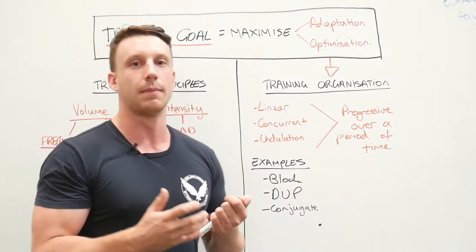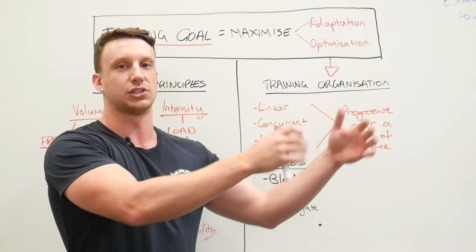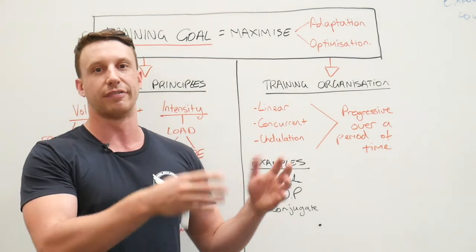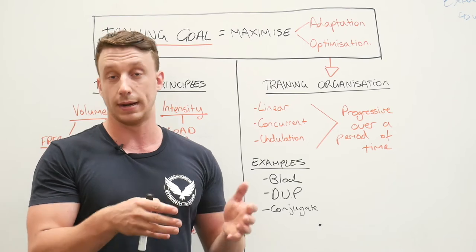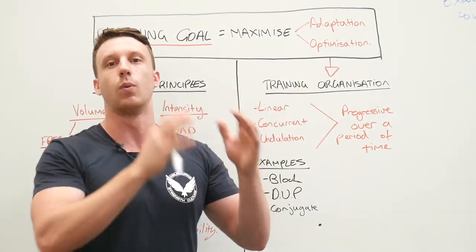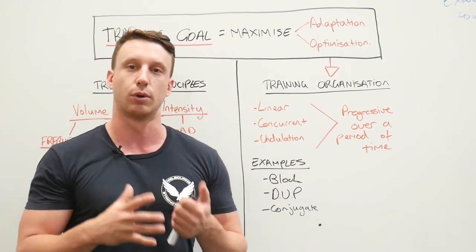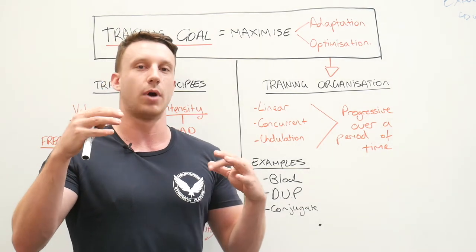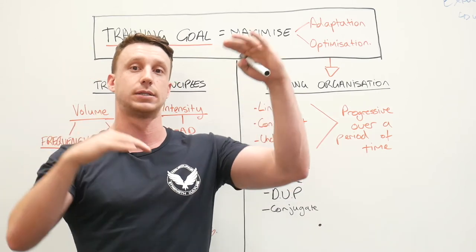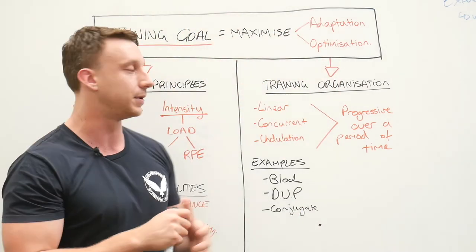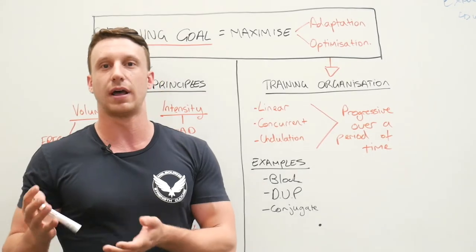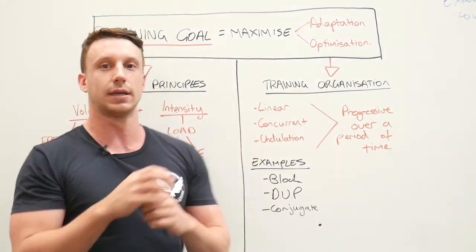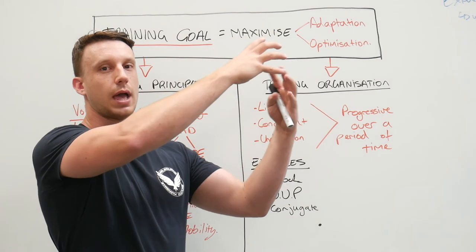A linear periodization program moves linearly through a step-by-step process of targeting one biomotor quality. For strength, you might do 5x5 in week one, 5x4 in week two, 5x3 in week three, 5x2 in week four, and 5x1 in week five. Concurrent programming is a style involving two variables interplaying throughout the weekly cycle — for example, a 5x5 for strength development alongside a 5x10 for volume development, two variables working together toward a desired result.